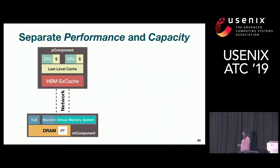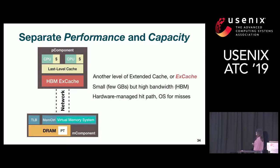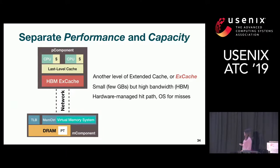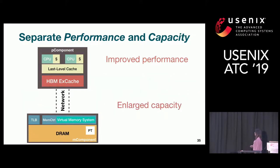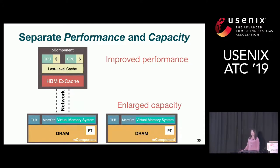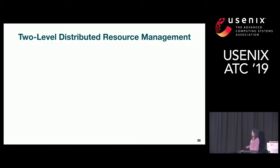What we should do is rethink the whole memory hierarchy and memory system. We propose separating performance and capacity of memory. For performance, we handle everything at P components, adding another level called extended cache — EX cache — below last-level cache, using a small few GBs of high-bandwidth memory. This EX cache is managed by hardware on the hit path, and the OS manages the miss path. We move all the capacity side across the network, increasing the size of each M-component's DRAM or even using non-volatile memory, and we can have multiple of them. With this architecture, we improve both performance and capacity, and can separate and manage them independently.